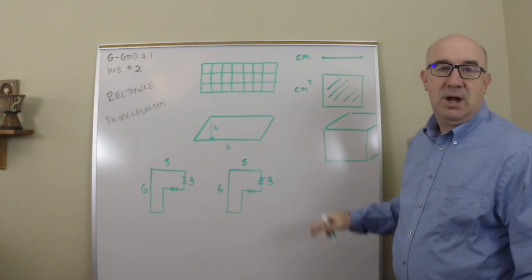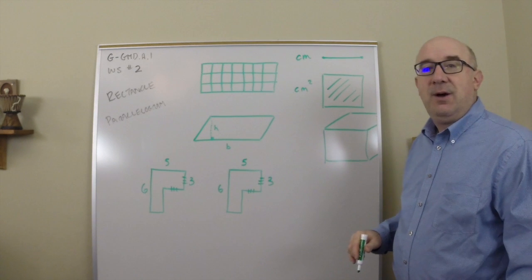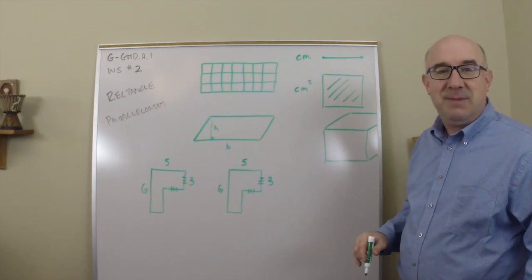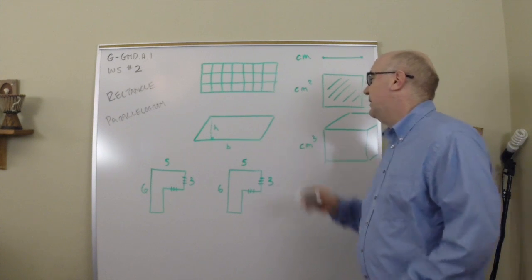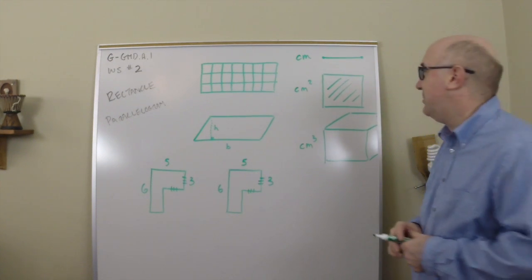When we go to volume, eventually, we're looking at a third dimension. A cube is what we're looking at. So we're looking at how many cubes fit into that object.